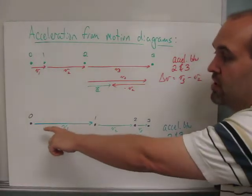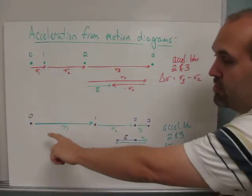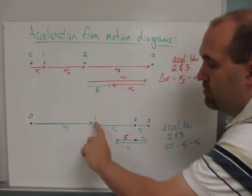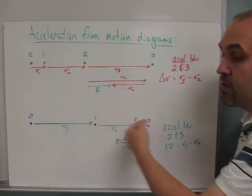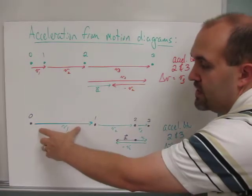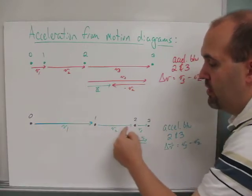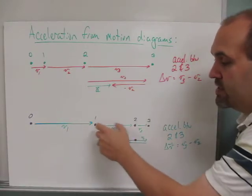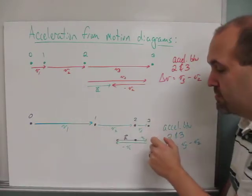In the second example, down here in purple and blue, we go 0, 1, 2, 3, so we're still moving to the right, but look what happens to the velocity in this case. The dots are getting closer together, which means the velocity is getting smaller and smaller as time goes on.